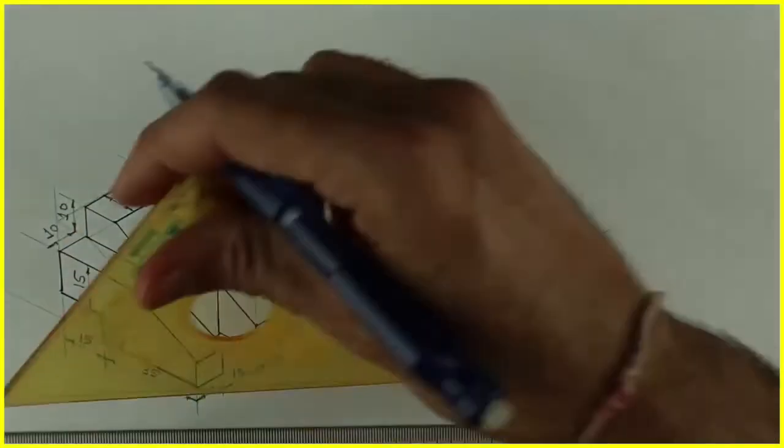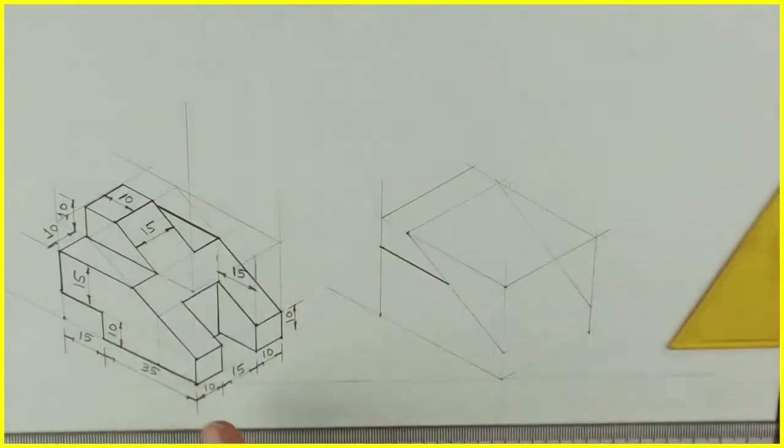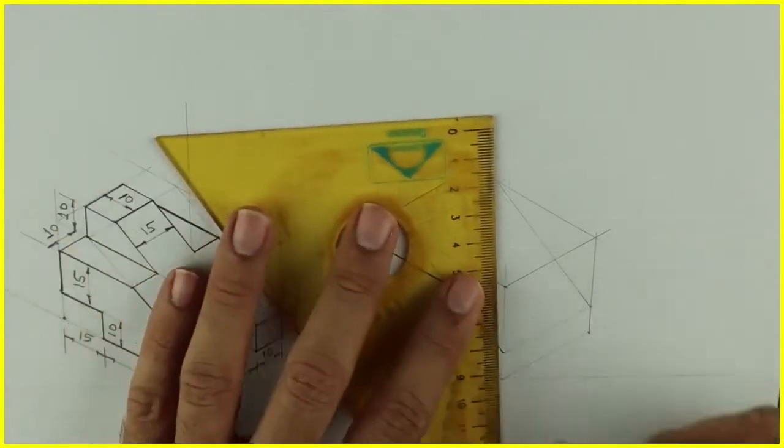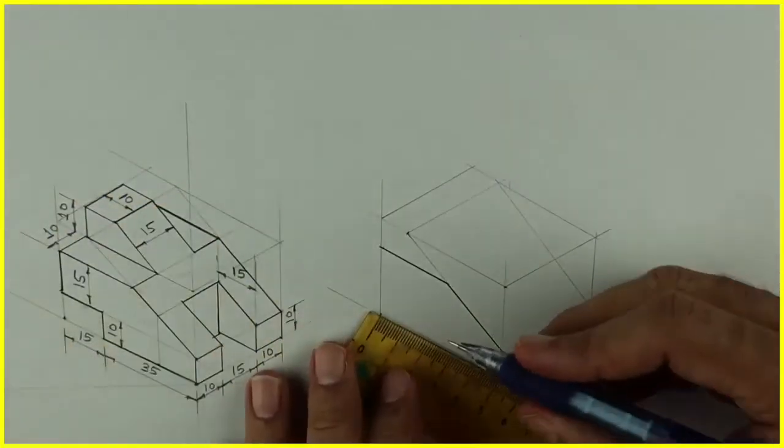Then you go down by 10. See this, so you draw this portion which you can see from left side.